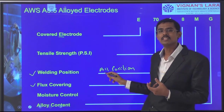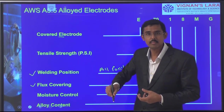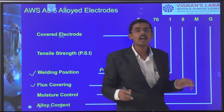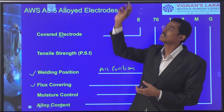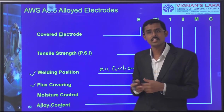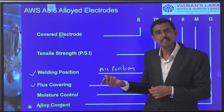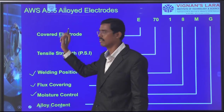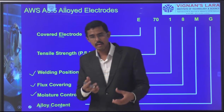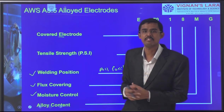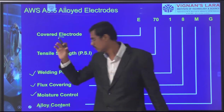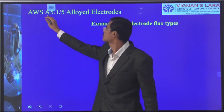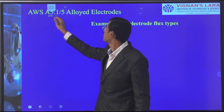So we have to look over all these things — alloy systems, moisture, welding positions — and we need the welded joint to withstand the strength factors. Therefore we have to purchase accordingly from the supplier. One more example I have given with respect to AWS A5.1 standard: electrode flux types. We have seen cellulose flux, rutile flux, and basic flux.